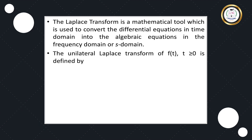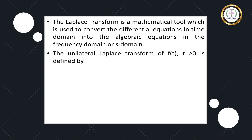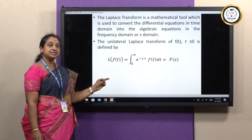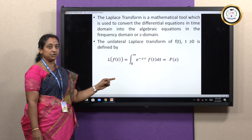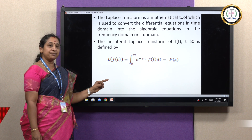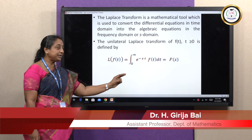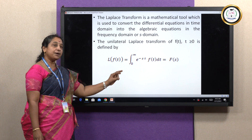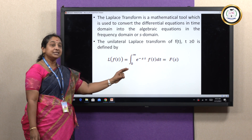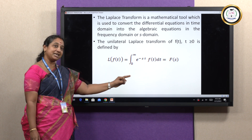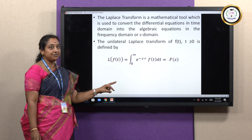The unilateral Laplace Transform of a function f(t), where t ≥ 0, is defined as: L{f(t)} = integral from 0 to infinity of e^(−st) f(t) dt. Here t is the time-dependent variable. When we apply the limits from 0 to infinity, the result is in terms of S, and we denote this as capital F(S).